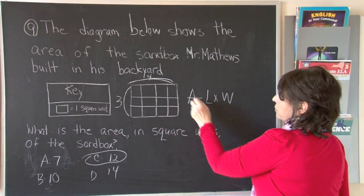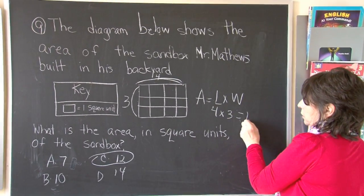The length, I'm sorry, was 4. 4 times 3 equals 12.